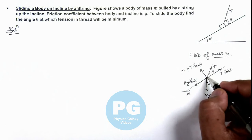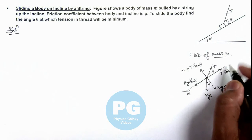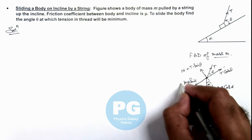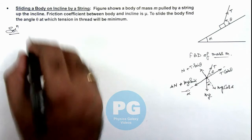Now if the body will start sliding up the incline, in downward direction along with mg sin α, the friction μN will also act.